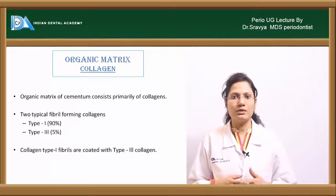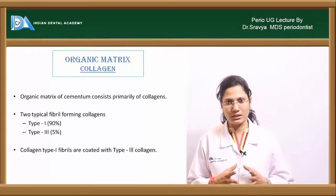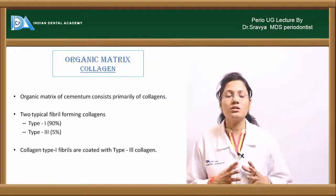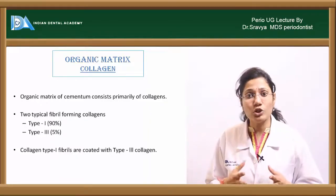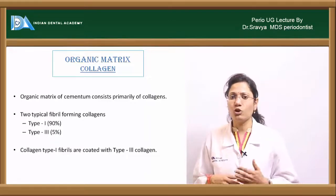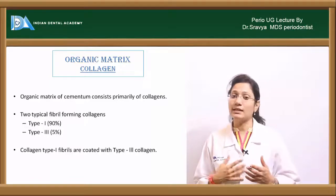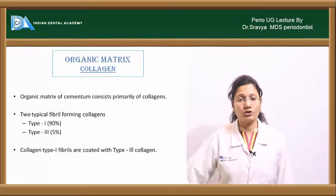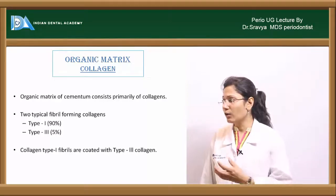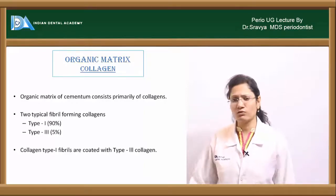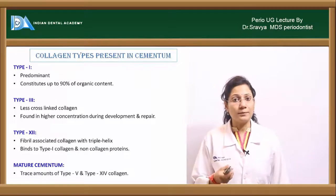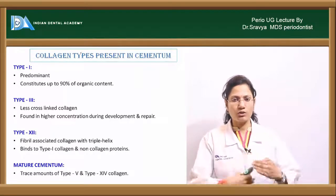The organic matrix of cementum is primarily composed of collagen — type 1 and type 3, and also type 12 and type 5. Type 1 collagen comprises 90% of the organic matrix. Type 3 collagen comprises about 5% and coats the type 1 collagen fibers.